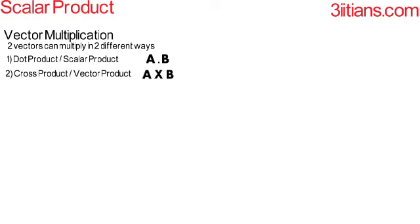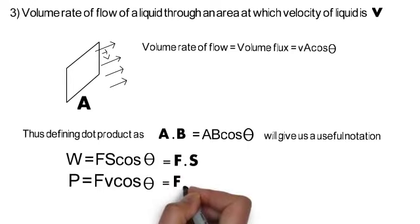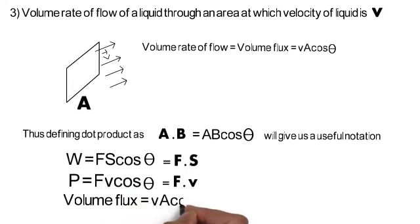Thus, defining dot product as A dot B equal to AB cosθ gives us a useful notation to conveniently represent many physical quantities. For example, work W equals F times S times cosθ can simply be written as F dot S. Power F times V times cosθ can be conveniently represented as F dot V. Similarly, the volume flux V times A times cosθ can be conveniently written as A dot V.